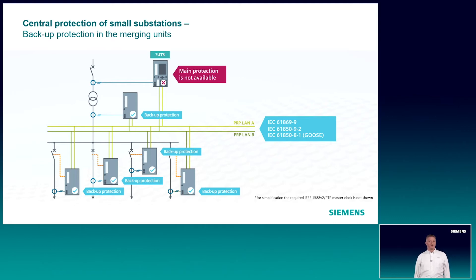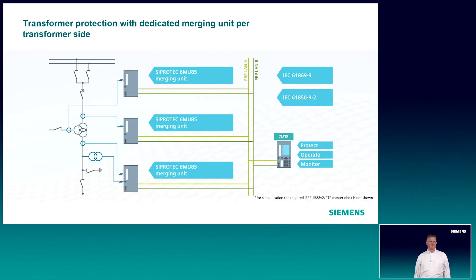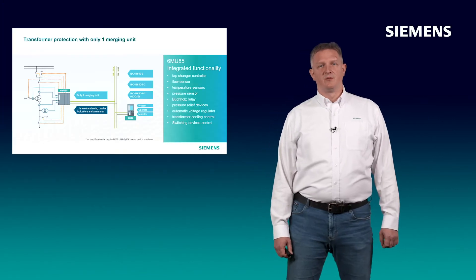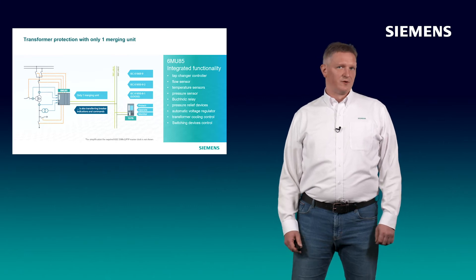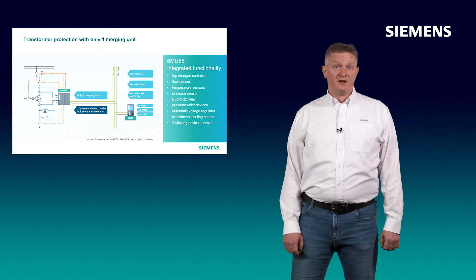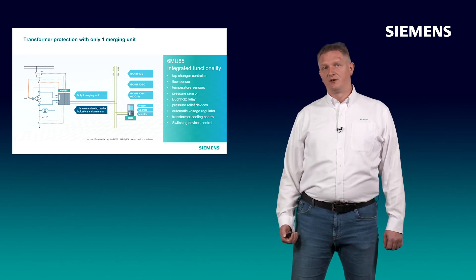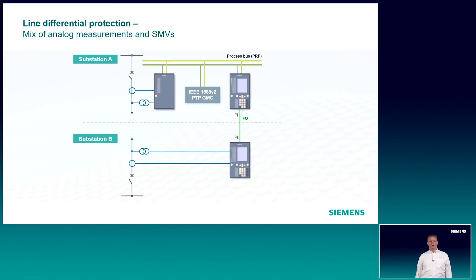Backup protection could be, for example, a simple overcurrent or voltage protection. For a transformer feeder, you can use individual merging units for each primary current transformer, or one single merging unit to reduce the number of units out in the field. In both cases, the merging unit interfaces to the primary equipment and can also act as a tap changer controller, collect further data from flow sensors, temperature sensors, or pressure sensors. The merging unit connects to the Buchholz relay; pressure relief devices can manage automatic voltage regulation, transformer cooling control, or switching device control. A mix of directly connected analog values and values received through the process bus is possible. This includes line differential applications where the opposite end does not need to be a process bus substation, meaning no time synchronization is required at the opposite end.